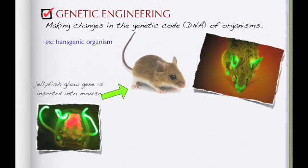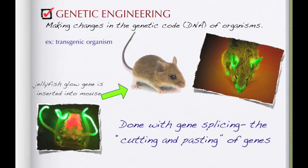One example of a genetically engineered organism is a transgenic organism. This is where an organism has a certain gene inserted into it. Our famous example is when you have a jellyfish glow gene inserted into a mouse. The process is done by what's called gene splicing — basically cutting the gene out of one organism, like the jellyfish, and inserting or pasting it into another organism, like the mouse.